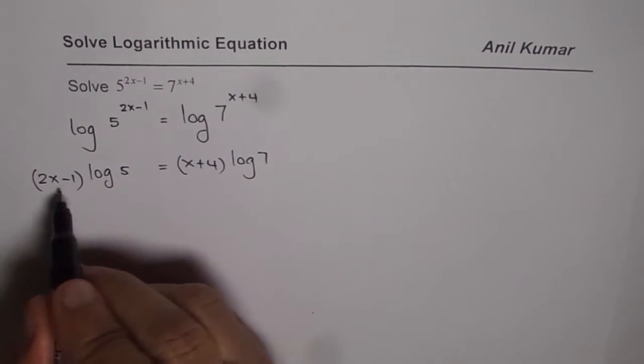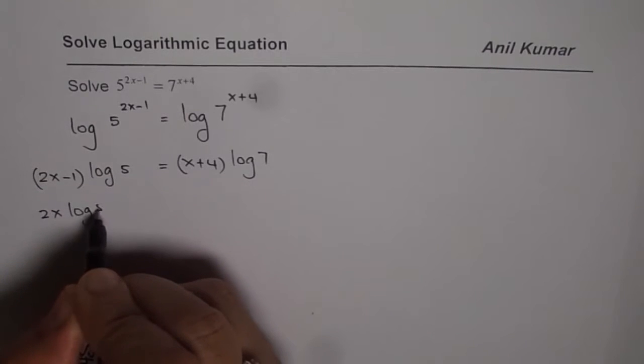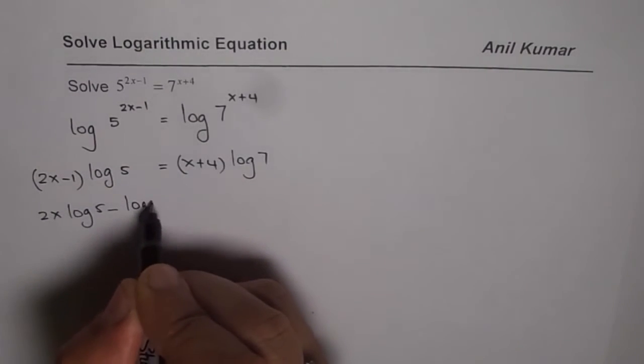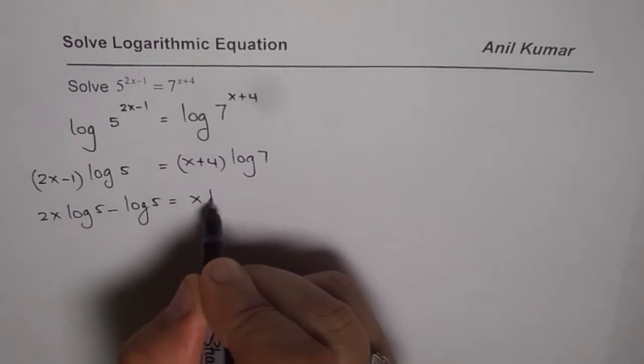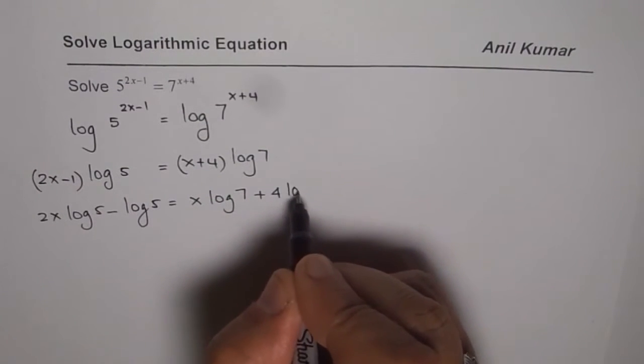Now we can expand it. So we get 2x log 5 minus log 5 equals to x log 7 plus 4 log 7.